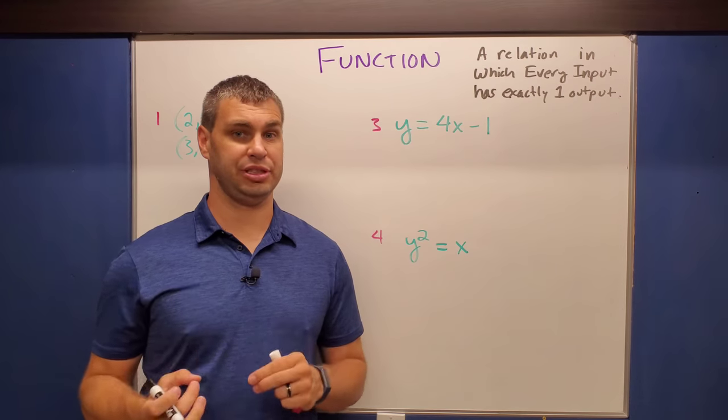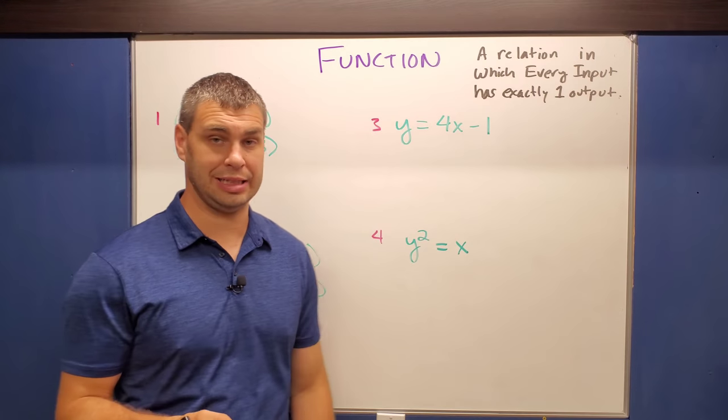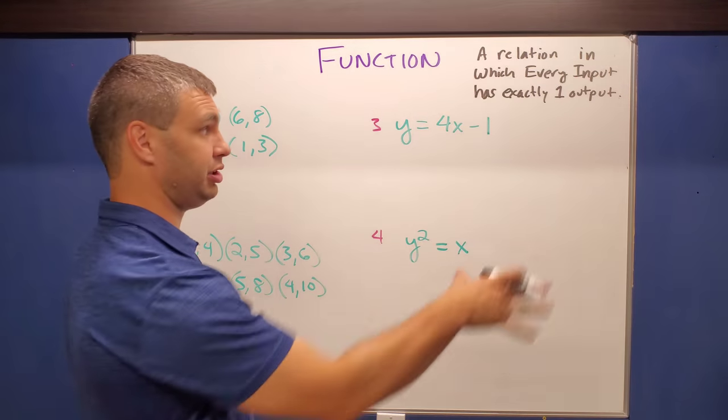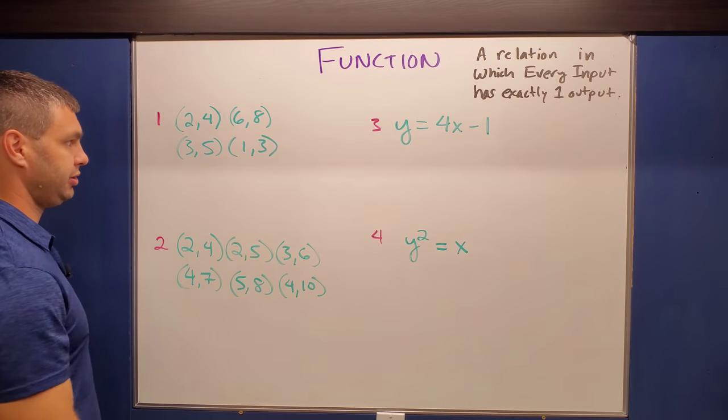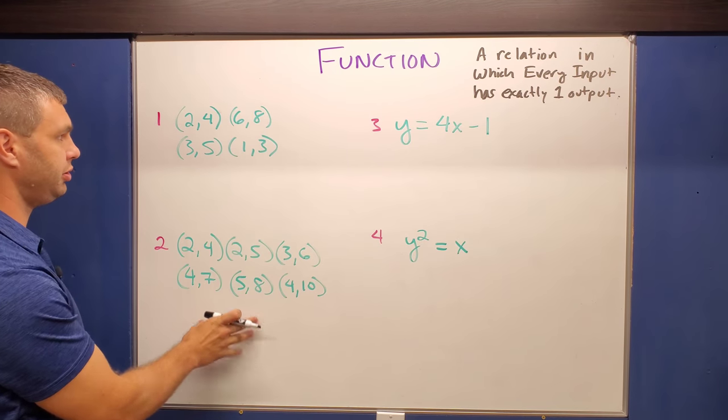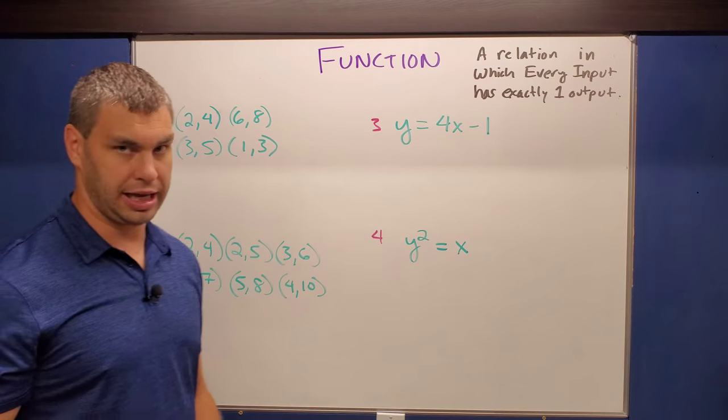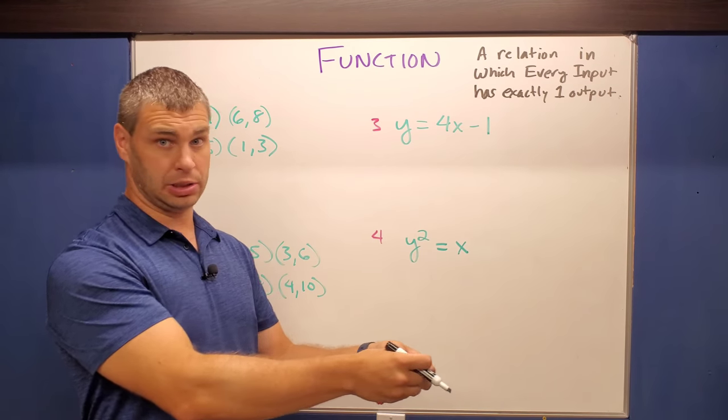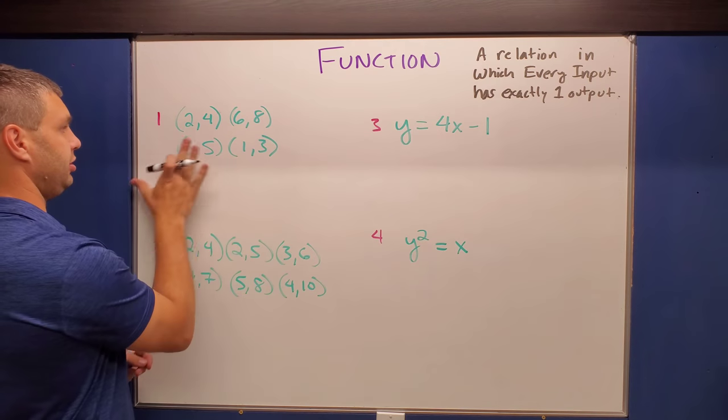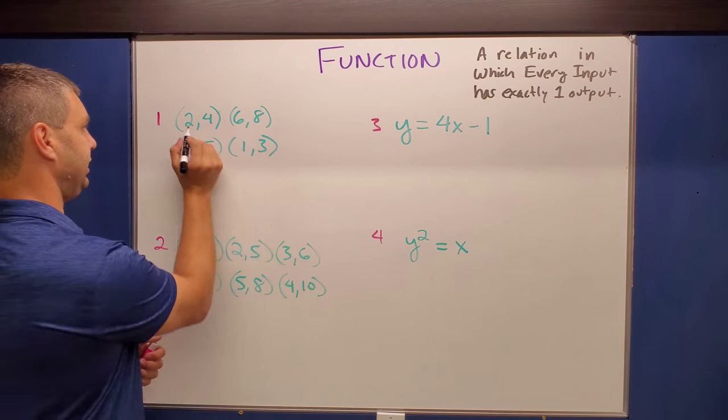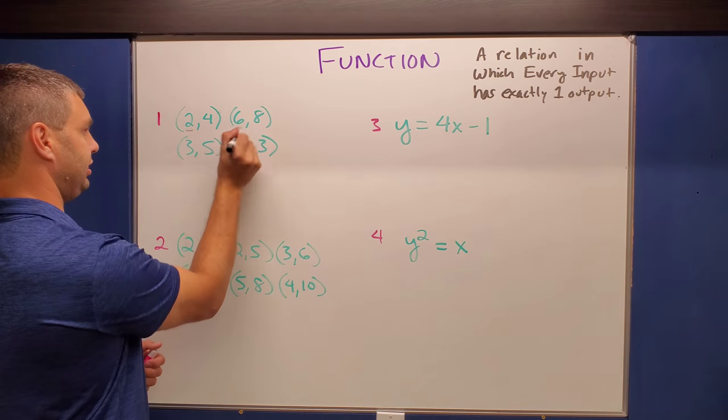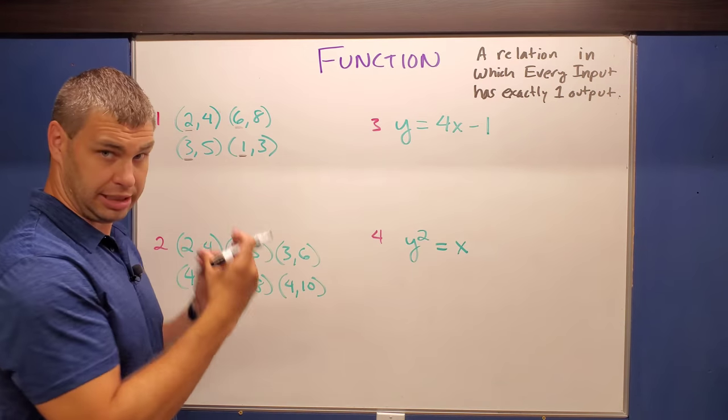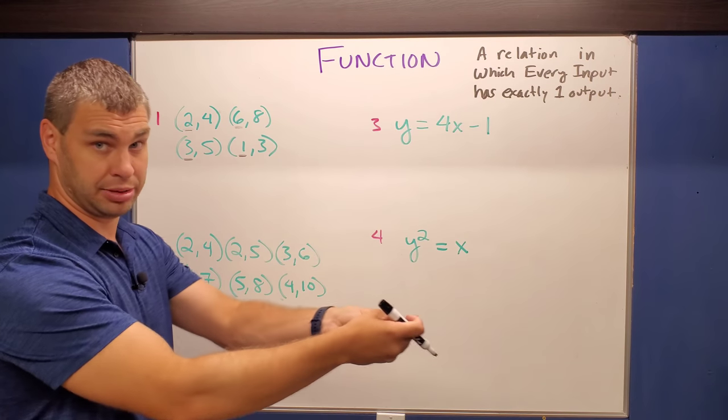All right. So how do all those vending machines relate to the math that you're going to see on your assignments? And the answer has to deal with the x's and y's or the inputs and outputs that you're going to see in the problems like this. So here we have some ordered pairs for numbers one and two. And in number one, remember every input has to have exactly one output. So what you're looking for in these different ordered pairs, there's four of them. I'm looking for any input, any x value. So the 2, the 6, the 3, and the 1, that has the same inputs that has a different output.